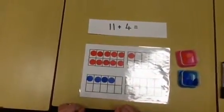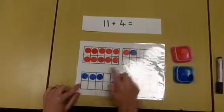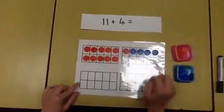Now we're going to combine the two numbers together by moving the blue counters up to join the red. And here we can clearly see the 11 add the 4.